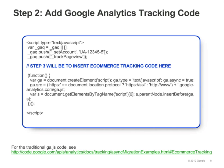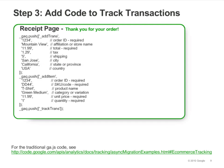For step two, add the Google Analytics tracking code to your receipt page. In step three, you'll be adding some eCommerce tracking code to the basic tracking code. Here's an example of what the eCommerce tracking code on your receipt page might look like. Remember, you'll be sandwiching this code into the basic Google Analytics tracking code.